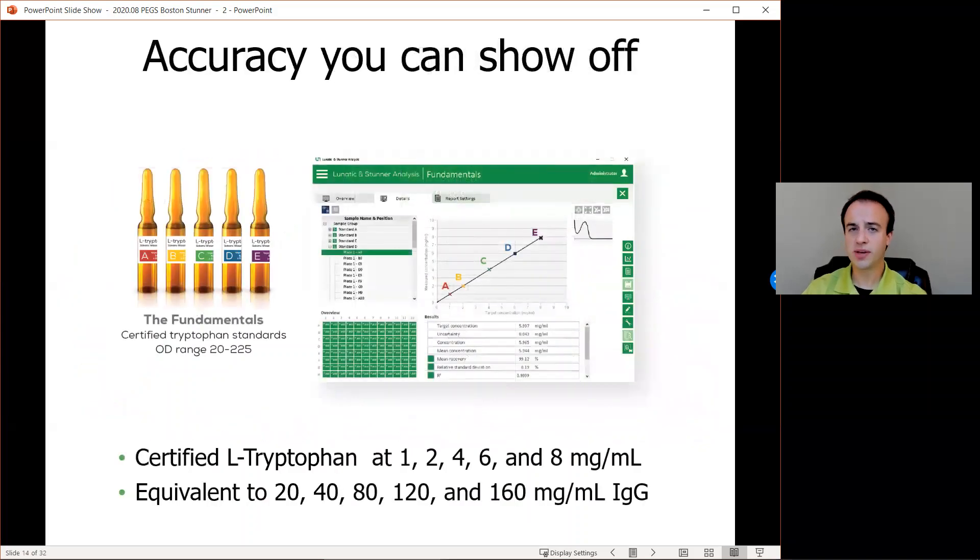If you want to show off the accuracy of Stunner yourself, we also have the fundamentals tryptophan standards to help demonstrate the accuracy, precision, and linearity of the instrument and prove that at any time. Since they're tryptophan standards, they're used at a protein-relevant 280 nanometer wavelength and an OD range of 20 to 225. If you account for the differences in molar extinction coefficients, the fundamental standards are equivalent to testing the concentrations of IgG from about 20 to about 160 milligrams per milliliter in terms of absorbance.